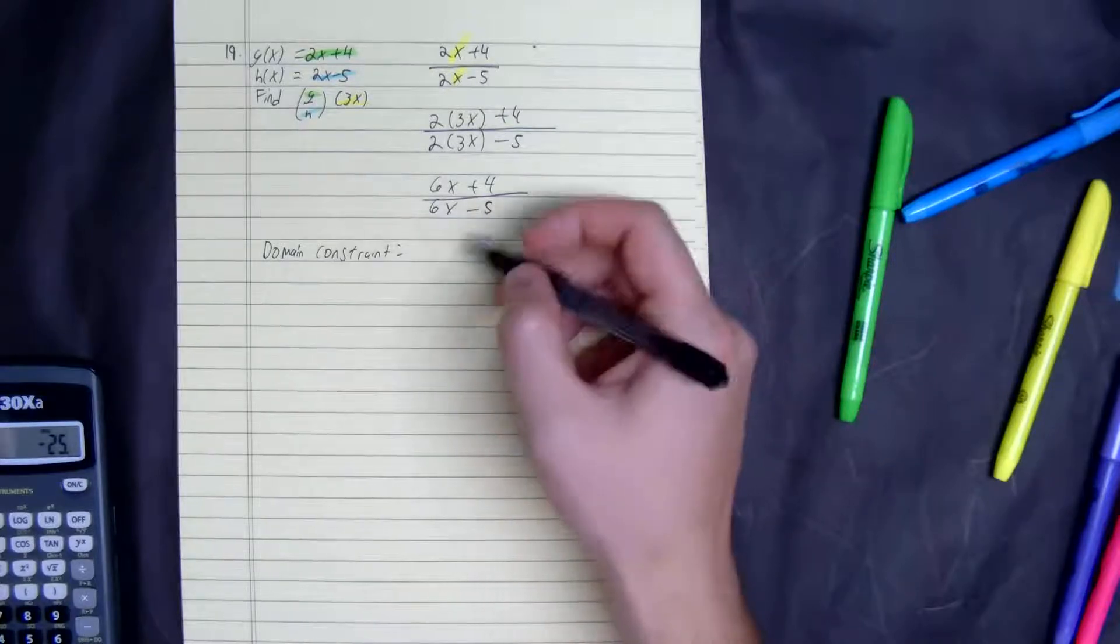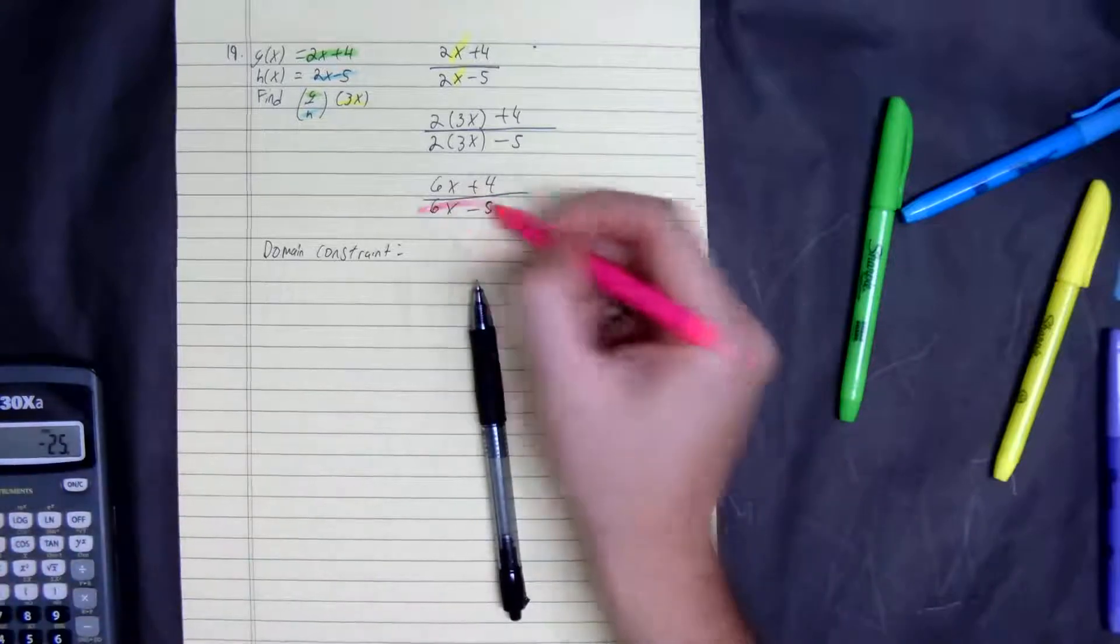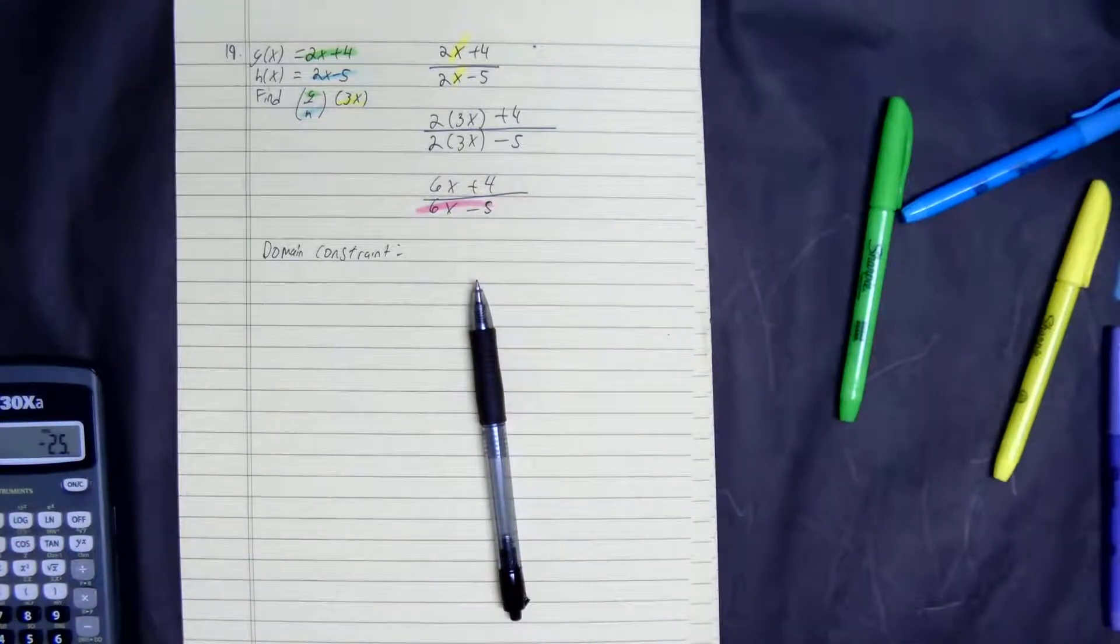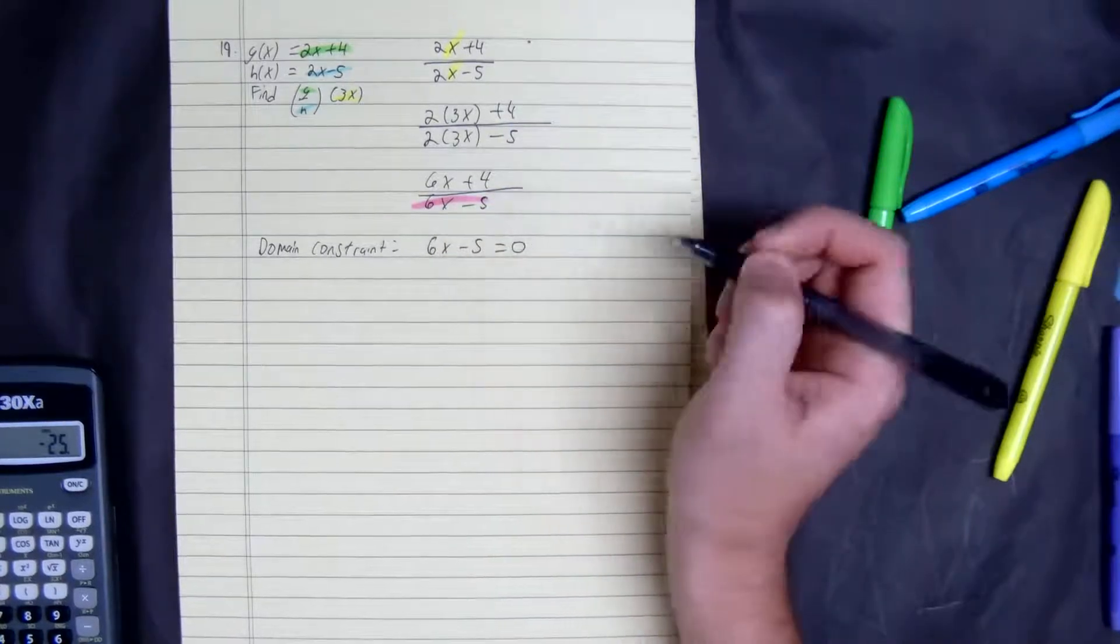Would be the following. What you do to find the domain constraint, you set the denominator to 0. So you do 6x minus 5 equals 0.